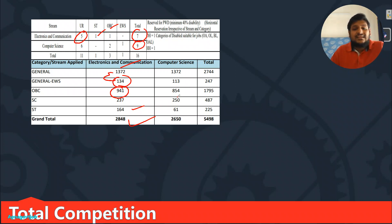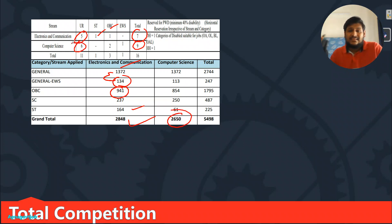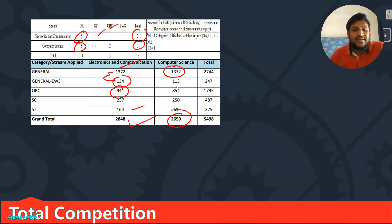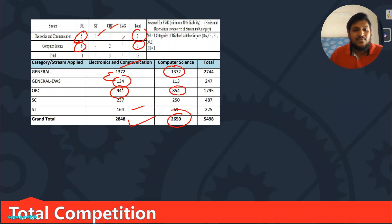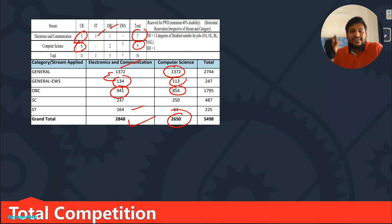For Computer Science, total 9 vacancies and total applications are 2650. For general, 6 vacancies — similar competition as ECE. For OBC, 2 vacancies with 854 applications, so roughly 427 per vacancy, which is less. For EWS, 1 vacancy with 113 applicants. There was no vacancy for ST, but 61 people applied for ST.